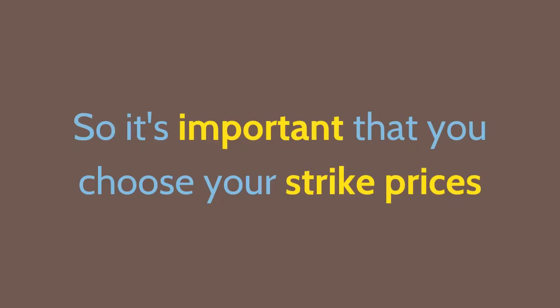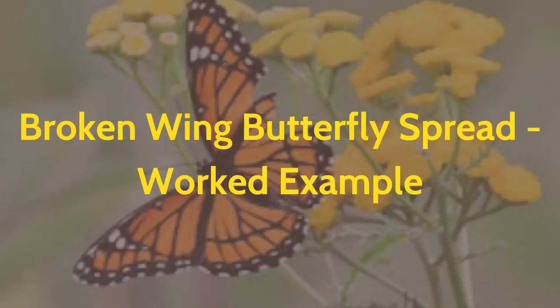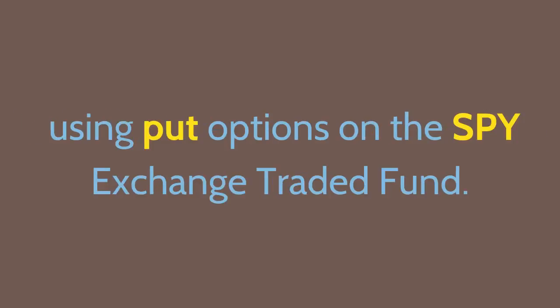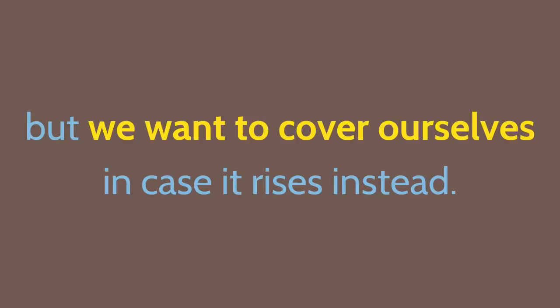So it's important that you choose your strike prices and length of time to expiration carefully. Let's illustrate the broken wing butterfly spread with a worked example. We're going to demonstrate how a broken wing butterfly is structured using put options on the SPY exchange-traded fund. In this scenario, the SPY closed at $129.36 and we think it may fall further, but we want to cover ourselves in case it rises instead. Here's how we would set up our spread.